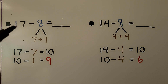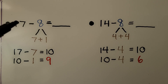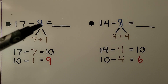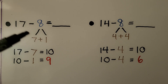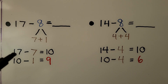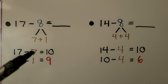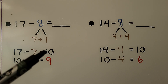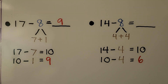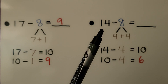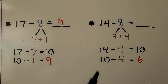Let's try a couple more. Here we have 17 minus 8. We need to make this a 10, which means we have to take 7 away. So for the 8, we're going to break it into a 7 plus a 1. Then we do 17 minus 7 to make the 10. Now we need to take away that one more from the 10. We have 9. So 17 minus 8 is equal to 9.